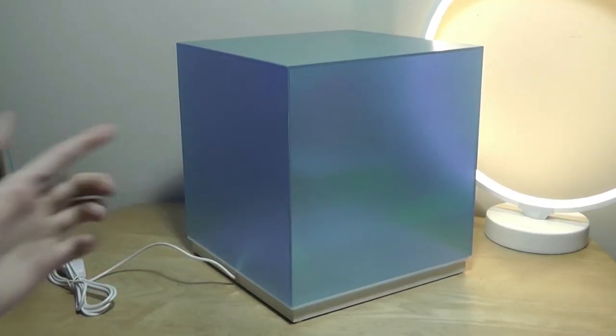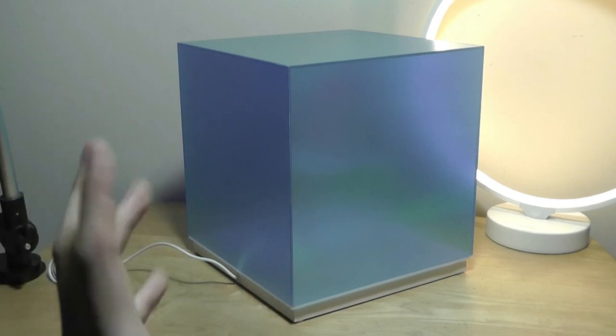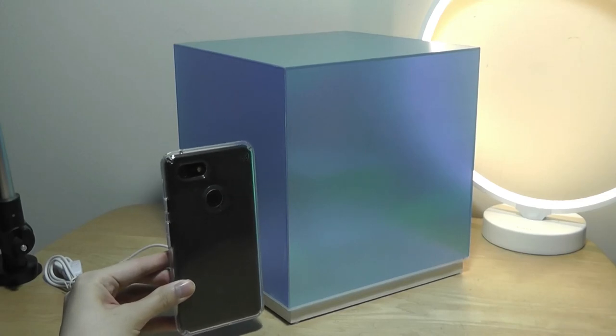There are some protective wraps, or kind of like a film or screen protector of sorts, on all of the cube's sides, which you should peel off to give you the most dazzling effect. But before we do that, just a quick size comparison.